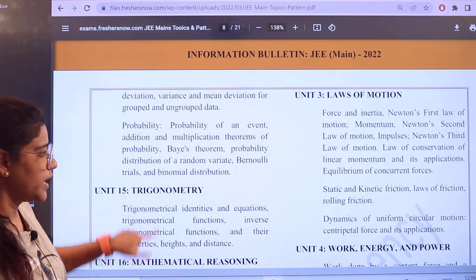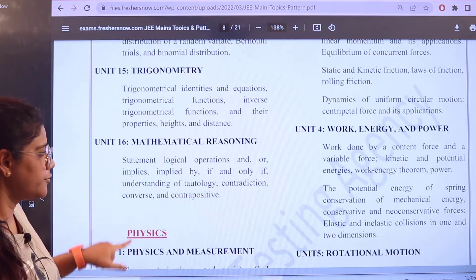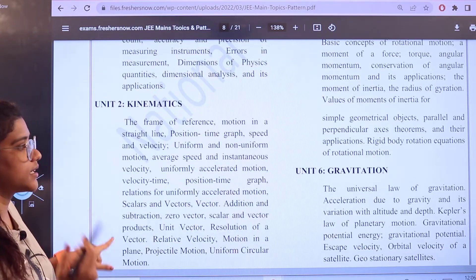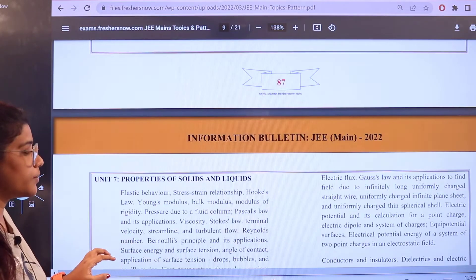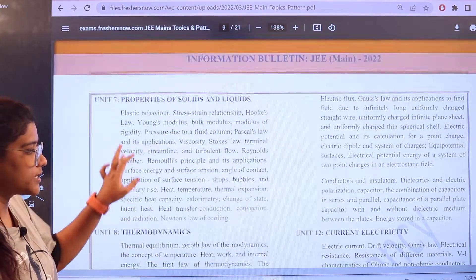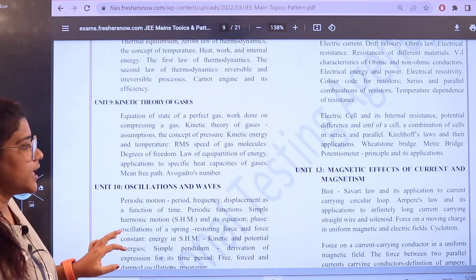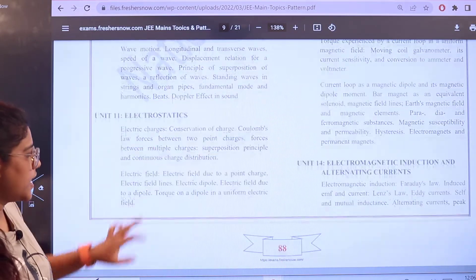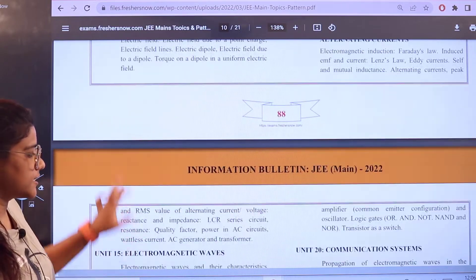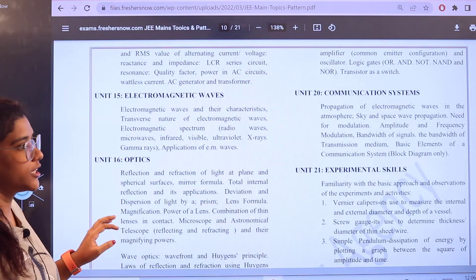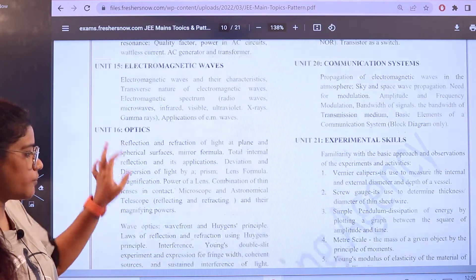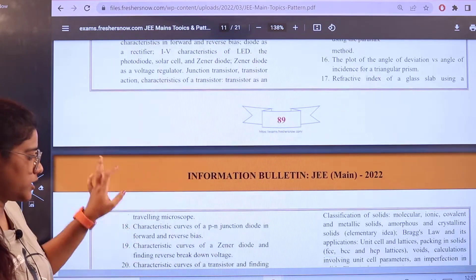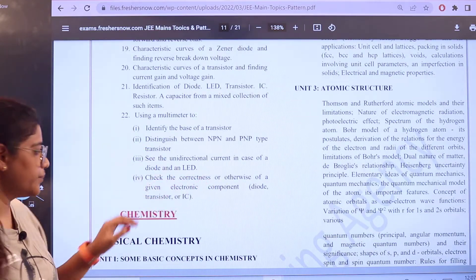Then for Physics you have Physical Measurement, Rotation Motion, Kinematics, Gravitation, then you have Properties of Solids and Liquids and Current Electricity, Thermodynamics, then Magnetic Effects of Current and Magnetism, Oscillations and Waves, then you have Electrostatics, then Electromagnetic Waves, Communication Systems, Experimental Skills, Optics, etc. Then heading over to the next section or the next subject which is Chemistry. So all of this is under Physics only.